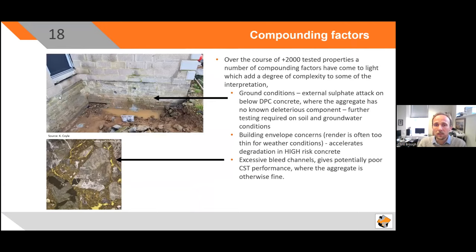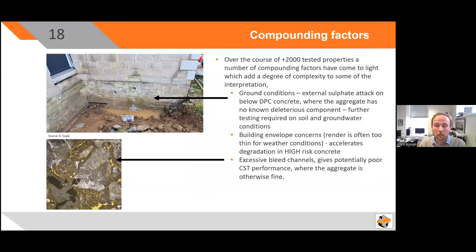Compounding factors: we mentioned this in the pre-legislative scrutiny meeting last year. Ground conditions mean that sometimes we are seeing external sulfate attack on properties that contain no known deleterious component — no free mica, no sulfides, otherwise fine aggregate — but the block work is severely degraded. Sometimes we see evidence for external sulfate attack in aggregate that would also be problematic. There is this compounding factor of external sulfate attack occurring in the minority of cases, and sometimes the render appears insufficiently suitable for the weather conditions — excessively porous — also impacting compressive strength testing performance.